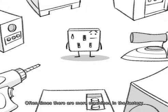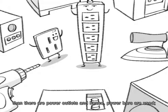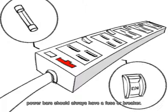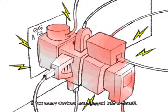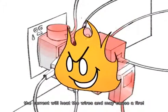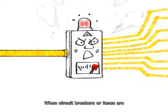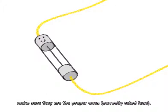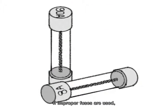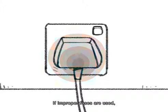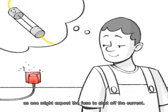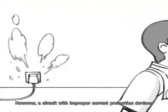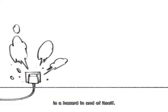Often there are more machines in the factory than there are power outlets, and hence power bars are used. Power bars should always have a fuse or breaker. If too many devices are plugged into a circuit, the current will heat the wires and may cause a fire. When circuit breakers or fuses are used to shut off the flow of electricity in the event of an overload, make sure they are the proper ones. If improper fuses are used, it can give a false sense of security, and a circuit with improper current protection devices is a hazard in and of itself.